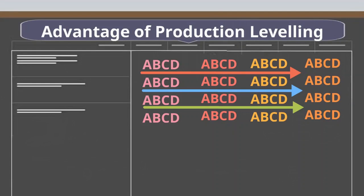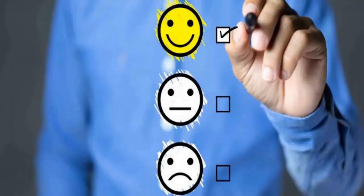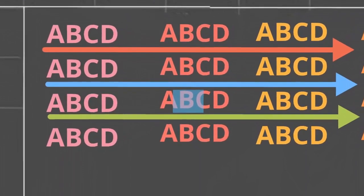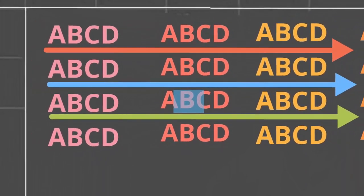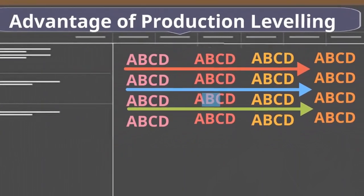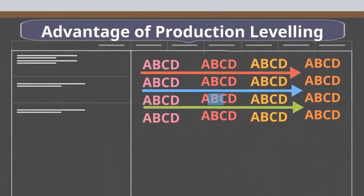The waiting time for one more piece of one type of product will come down dramatically. The customer can be serviced much better. If one defect is produced, there is a good chance that it is the only defect and no more. It will be much easier to produce one more of that product to replace the defect. Raw material and finished goods holding will be much lesser.